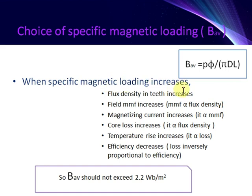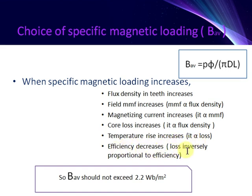Choice of specific magnetic loading: when specific magnetic loading increases, flux density in teeth increases and field MMF increases, since MMF is directly proportional to flux density. Magnetizing current increases since it is directly proportional to MMF. Core loss increases since it is proportional to flux density. Temperature rise increases because of losses, and efficiency decreases due to loss.